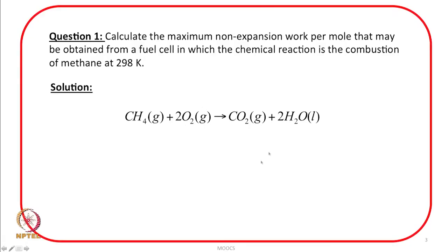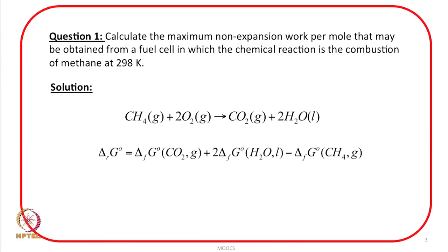So therefore, for the given question here, I need information on the free energy of formation of water, free energy of formation of carbon dioxide, and free energy of formation of methane. Oxygen is an element, so immediately we can say that the free energy of formation of oxygen must be 0. Therefore, we need data on free energy of formation of water, carbon dioxide, and methane. Once I have this, I can use the expression: the reaction Gibbs energy equals ΔfG(CO₂) + 2·ΔfG(H₂O, liquid) − ΔfG(CH₄, gas), and for oxygen the value is 0.